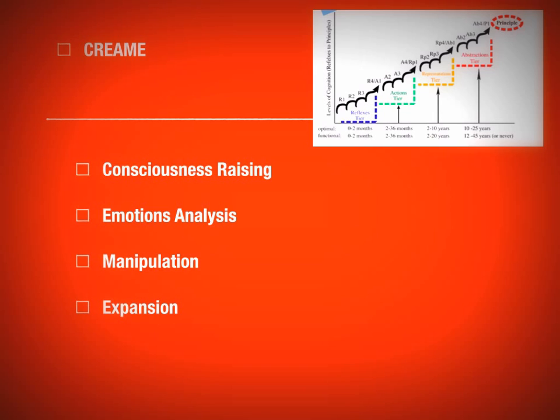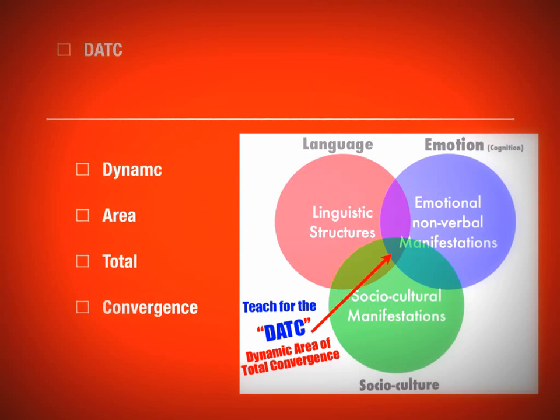The Manipulation stage — where students might rewrite a passage, for example — is about personalization that makes the content real for them. It should be an integral part of any teaching. Finally, the Expansion part lets students be creative with the content: taking it further, imagining different situations, putting it in different contexts. That's CREAM, and I'll show you specifically how I use it in my own textbook designs.